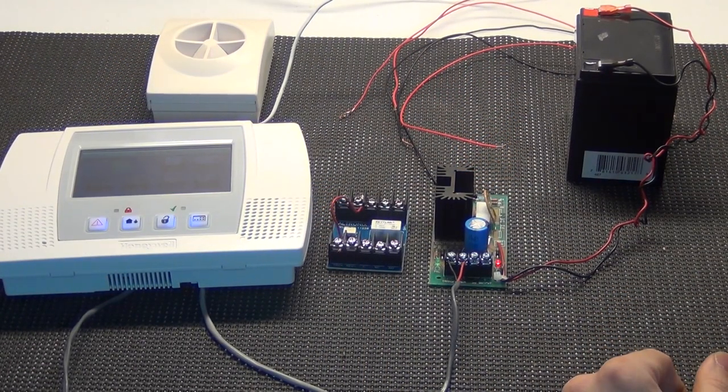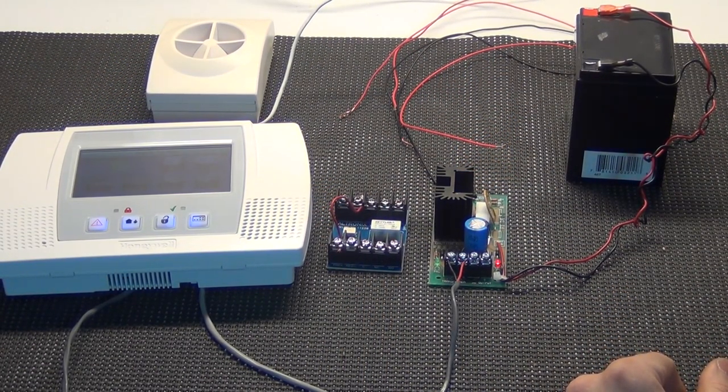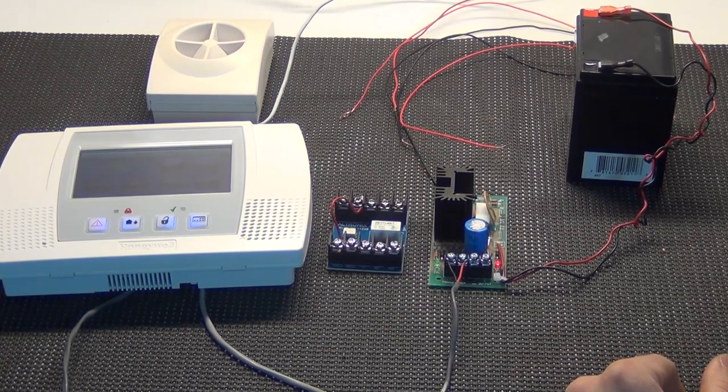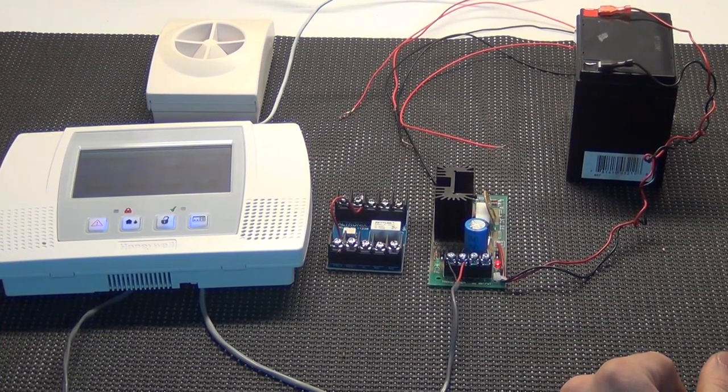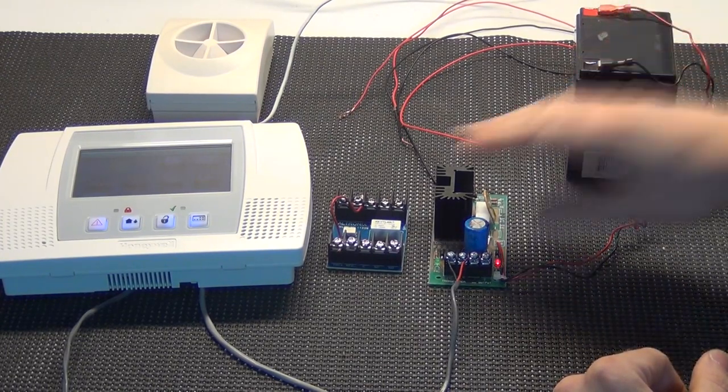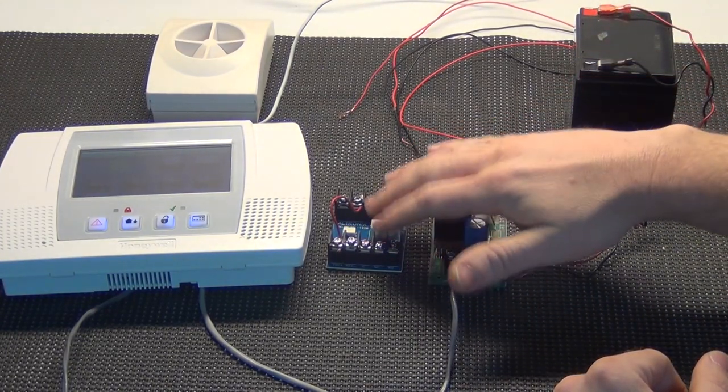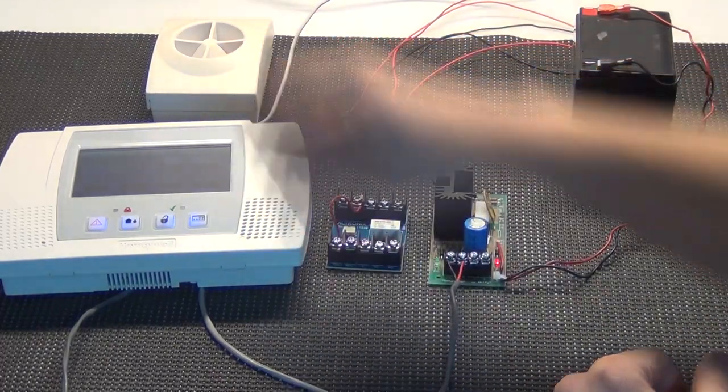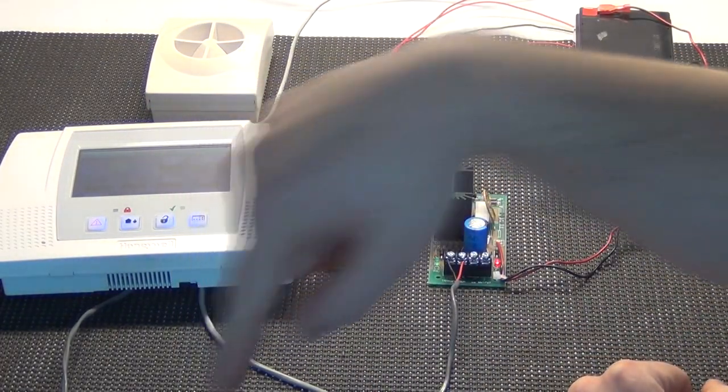Alright, what I have here is all the components you'll need to hook a hardwired siren to your Lynx L5100 touchscreen alarm system. I've got the panel itself, a backup battery, a power supply, an ultra-sensitive relay, a siren, and I have my transformer down here on the floor. I'm going to wire that in.